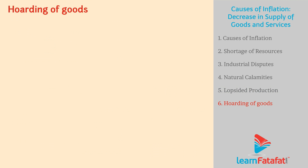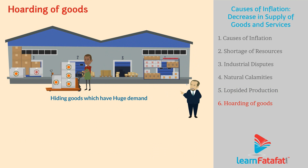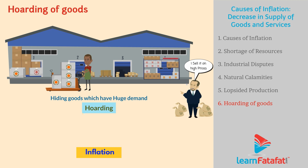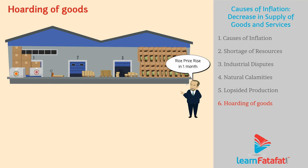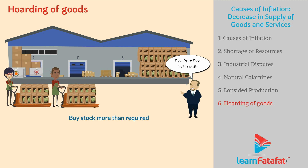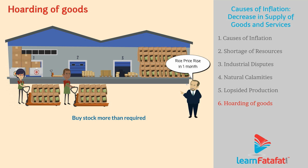Hoarding of goods: The practice of hiding goods which have huge demand so as to sell them at higher prices is called hoarding. By hoarding, suppliers intend to earn more profit, and it leads to inflation. Sometimes, consumers identify that prices of a commodity will increase in the near future, so they buy stock more than required. This is also a type of hoarding, and due to hoarding, inflation takes place.